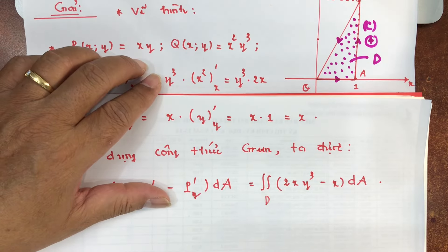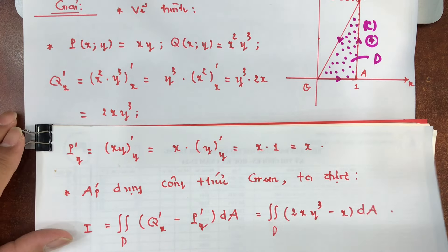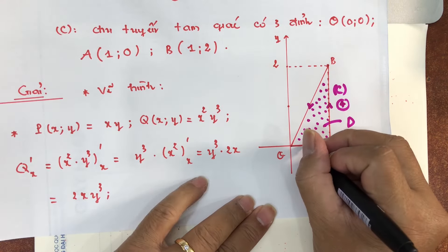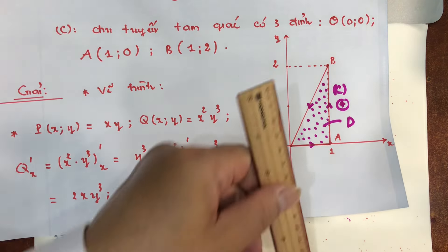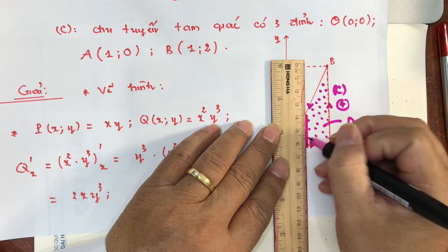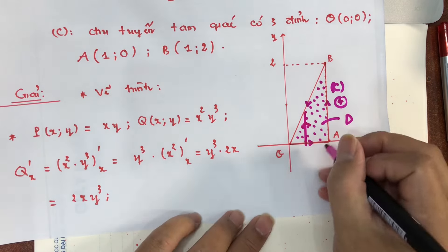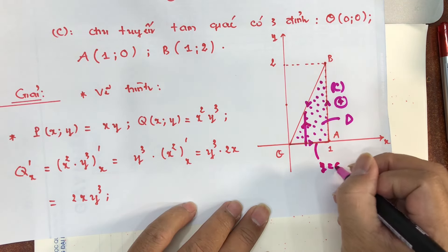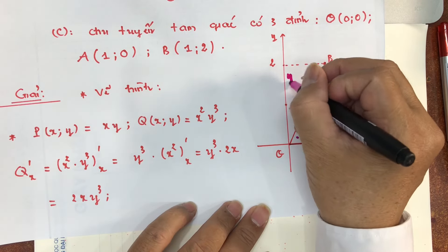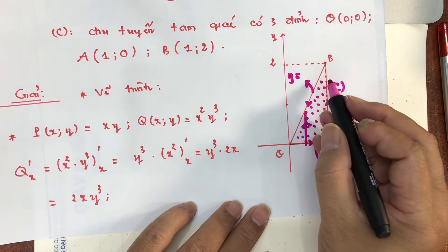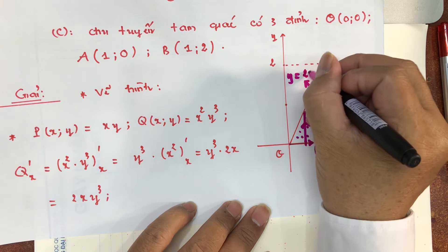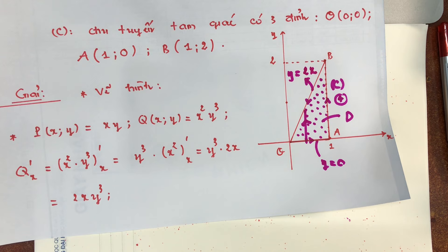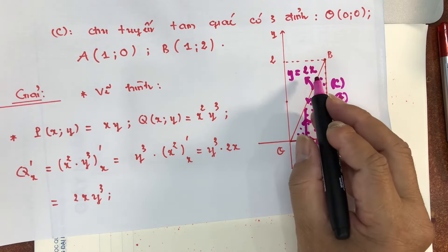Xác định cận cho miền D. Biến x đi từ 0 tới 1. Biên phía dưới là cạnh OA, phương trình y = 0. Biên phía trên là cạnh OB — đường thẳng qua O(0,0) và B(1,2), phương trình rõ ràng là y = 2x. Vậy y đi từ 0 đến 2x.